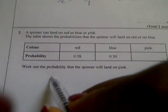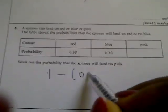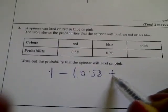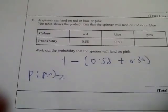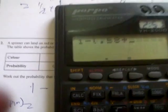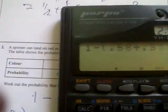The probability that it will land on pink will be 1 minus (0.58 plus 0.30), which gives a probability of pink equal to 1 minus 0.58 plus 0.3, which is 0.12.